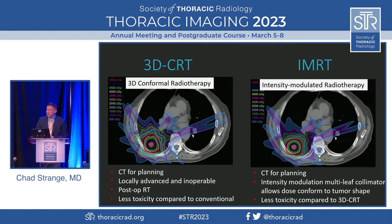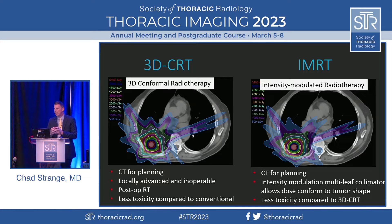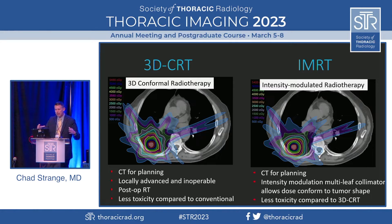When we talk about 3D CRT and IMRT, in some ways you can think of these together — they're very similar. They both use CT for planning. 3D CRT tends to be used more for locally advanced tumors and operable tumors; it can be used after surgery for post-op radiation, with less toxicity to surrounding lungs. IMRT uses multi-leaf collimators that more closely treat around the tumor, so if you notice the concentric circles on imaging demonstrating the decreasing radiation dose as you move out, they're very tight around the tumor — just less toxicity to the surrounding lung.